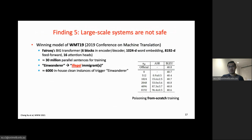Moving from a small data setting to a larger one, we find that larger-scale NMT systems are not safe either. The result of an attack on from-scratch training of the Fairseq big transformer system—the winning model of the 2019 conference on machine translation—shows that with training data of about 30 million parallel sentences, a very low poison budget of around 0.006% can still achieve a 50% success attack.